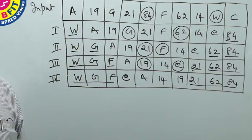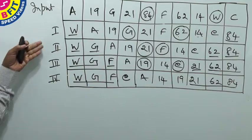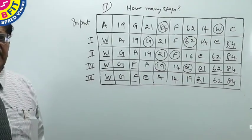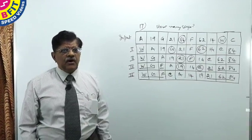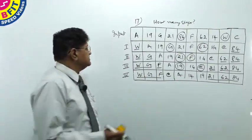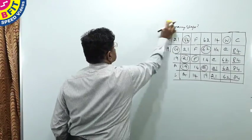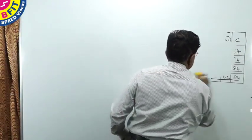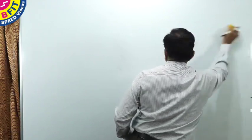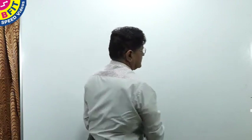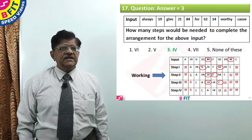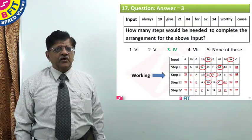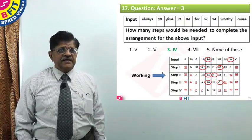So the question was: how many steps would be needed to complete the arrangement? The answer is 4 steps are required. Answer for question number 17 is 4 — that is, 4 steps are required to complete the arrangement in total.